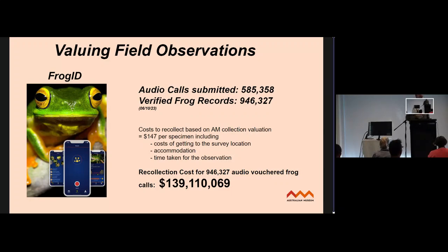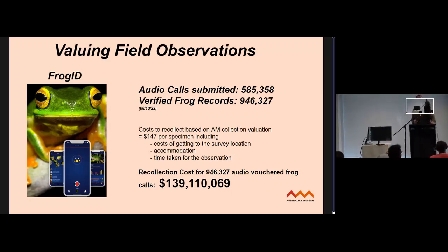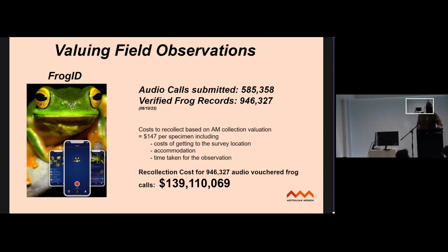That figure covers costs of getting to the survey location, accommodation, time taken for the observation, etc. If you look at FrogID records — which are audio calls, not quite as good as a specimen but pretty good since you can identify species and revisit the database — you're looking at around $139 million contributed by citizen scientists for recollection of that data. This is all up for debate, but it gives you an idea of the value citizen science is contributing.